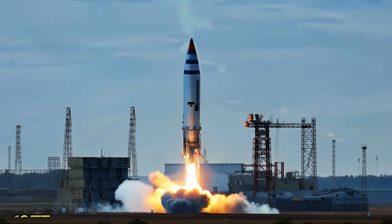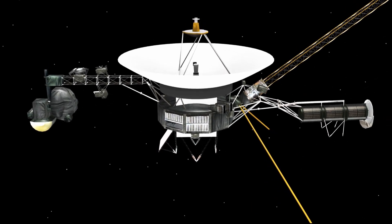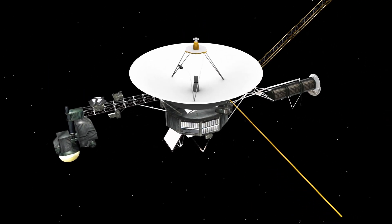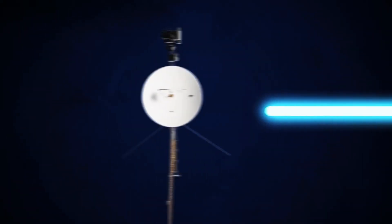Launched from Cape Canaveral in 1977, just a month apart, Voyager 2 departed first, but due to its trajectory, reached the solar system's edge six years after Voyager 1.